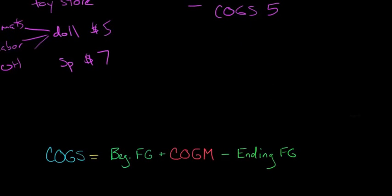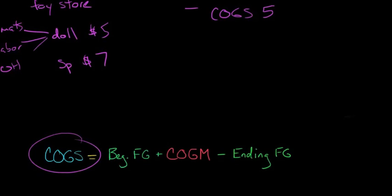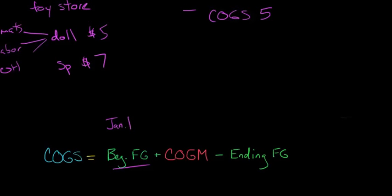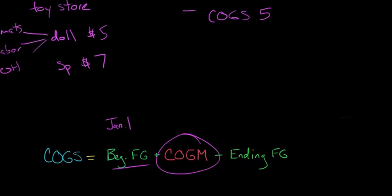But the equation itself is quite simple. Cost of goods sold is basically equal to the beginning finished goods inventory. So let's say that it was January 1, the inventory, and then we add in the cost of goods manufactured, which if you don't know how to compute cost of goods manufactured, see the previous video. And then we subtract out the ending finished goods inventory.